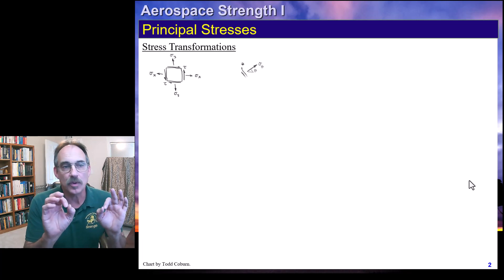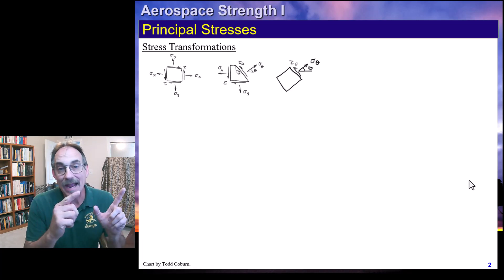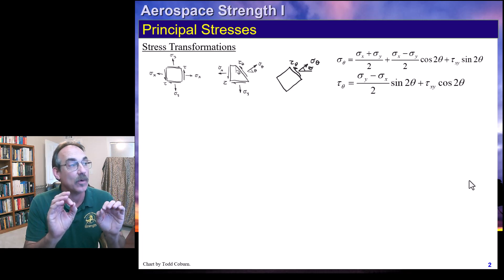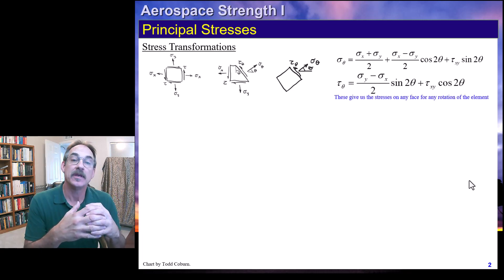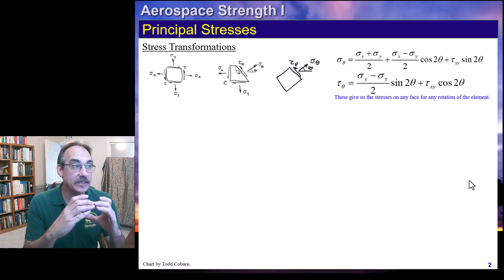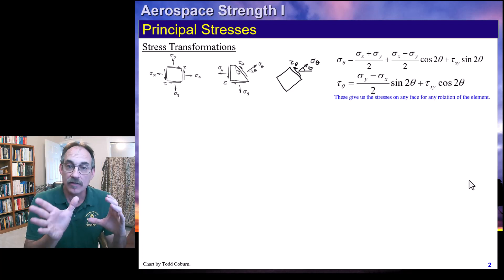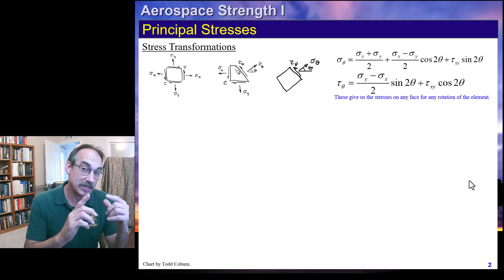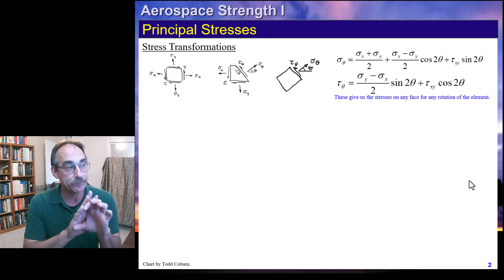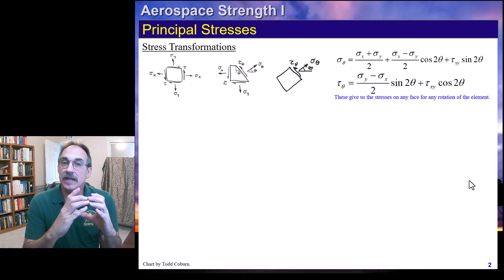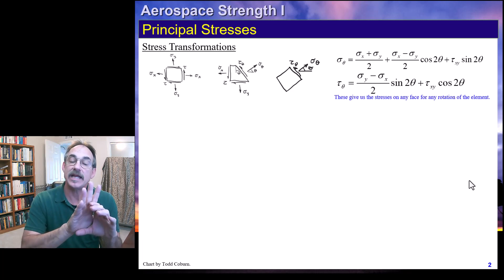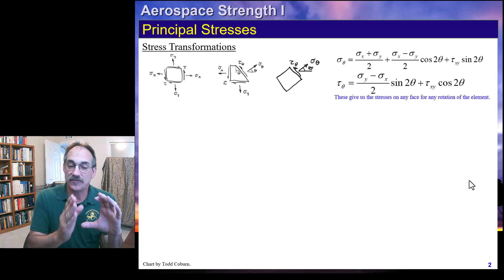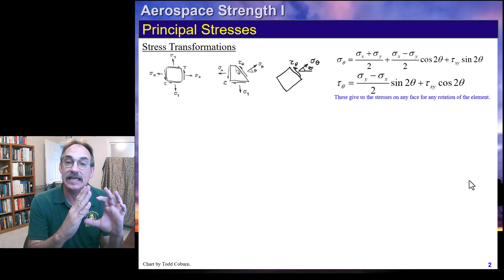In order to understand principal stresses, we need to think back to what we learned in our last video on stress transformations. We saw that we have a plane stress element with stresses on the x-face, the y-face, and shear stresses on those faces. Plane stress means our z-surface is unloaded, unstressed. We can think of cutting it at a different angle and looking at how those stresses change, or think of rotating that element and looking at the stresses on that face as we rotate the element in different coordinates.